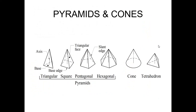Coming to pyramids — the main difference between a prism and a pyramid is that in a pyramid you won't have two polygon surfaces. You will have just one polygon which is the base, and at the top you have something called the apex or vertex. All the corners are joined to this common apex from the base. So this is a triangular pyramid, and you also have square pyramid, pentagonal pyramid, and hexagonal pyramid.